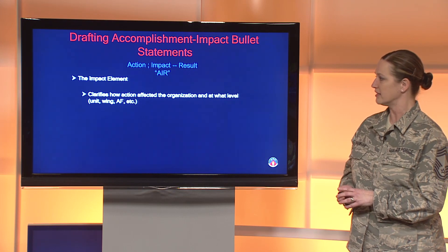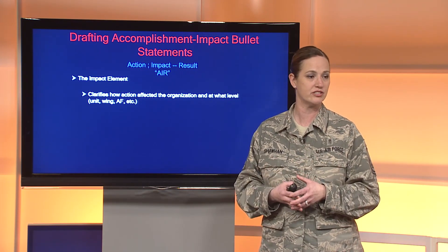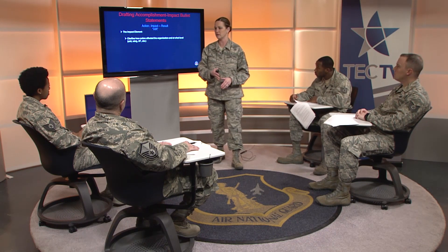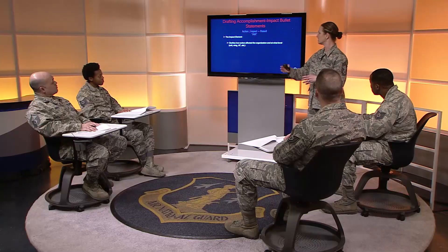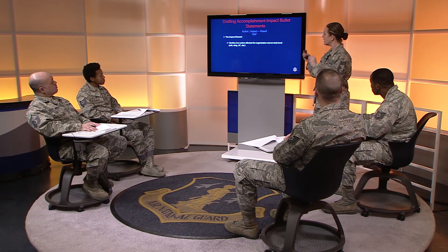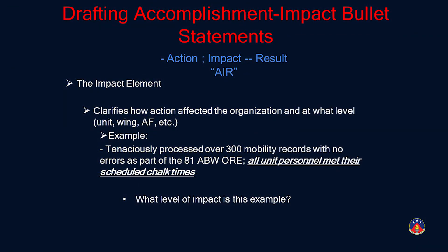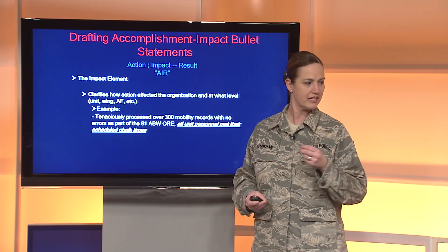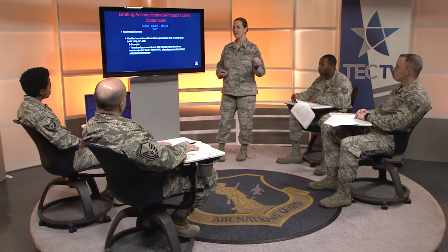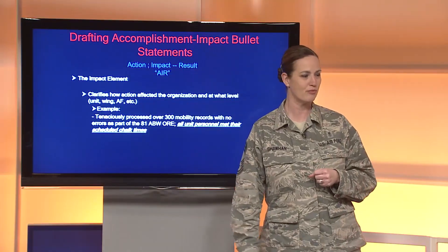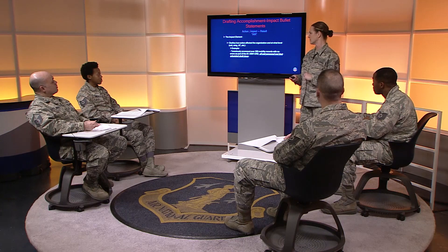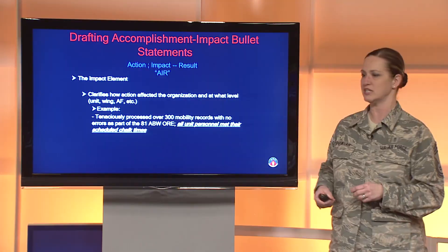The next step is the impact element, which classifies how the action affects the organization — showing the immediate impact and setting the level. Think of it as the result light. In our example: after the action, 'all unit personnel met their scheduled chalk times.' Anyone who's been through an inspection knows how important that is — error-free records keep things moving. The moment errors appear, things slow down, you miss chalk times, and schedules get pushed out. The impact was clearly felt at the unit level.